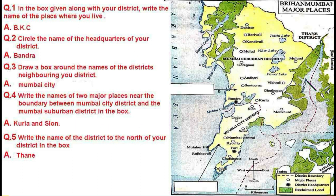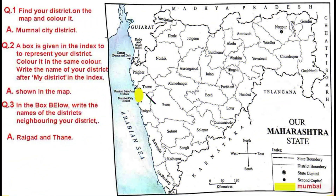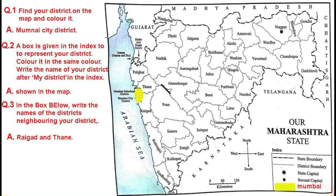I hope you understood this Mumbai District map easily and can answer questions in your textbook. The next map is of our Maharashtra State. This is the map of Maharashtra State with all the districts shown. This is the state boundary — see how all the state boundary lines are drawn. Inside Maharashtra State, these lines show the district boundary, for example between Nashik and Thane.